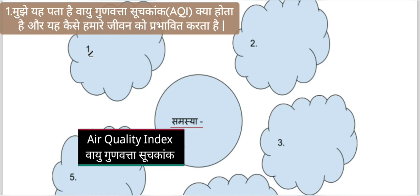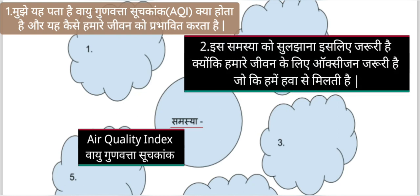For the second question — why is it necessary to solve this problem — you should write that it is necessary to solve this problem because oxygen is essential for our lives. Oxygen comes to us from the air, and if nitrogen dioxide, carbon monoxide, and other pollutants increase in quality, then the quality of oxygen will decrease.